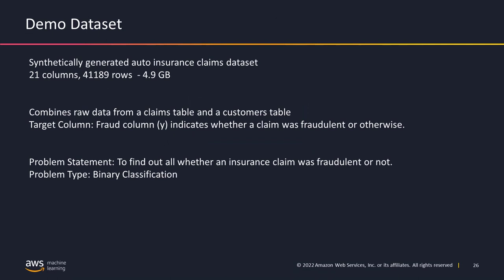For the demo, we are going to use the auto insurance claim dataset. It is around 4.9 GB with 21 columns and around 42,000 rows. This dataset combines raw data from the claims table and the customers table. The target column is a fraud column, the problem type is binary classification, and the problem statement is whether the insurance claim is fraudulent or not.